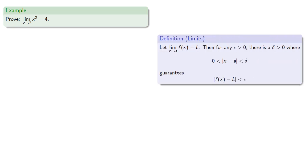So we know our starting point is we want the absolute value of x minus 2 to be between 0 and delta. And we want to end with absolute x squared minus 4 to be less than epsilon.